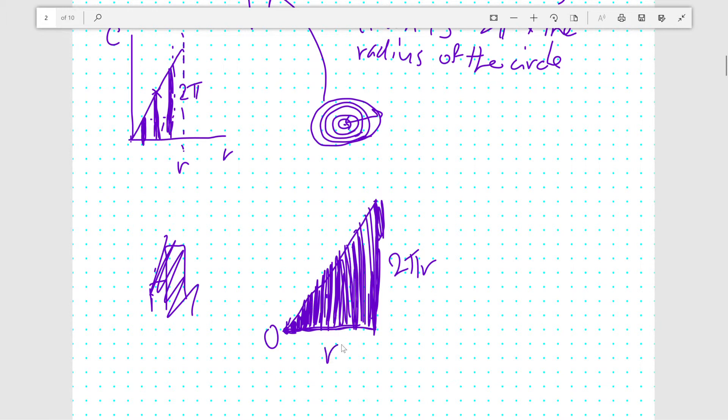This triangle is of base r and height 2 pi r. So the area would be half times base times height, or the area would be half times r times 2 pi r, or it would be pi r squared. And that's the second way.